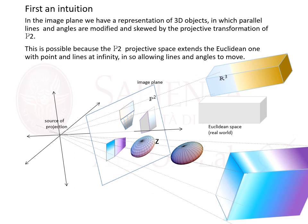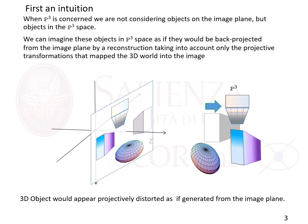This is made possible because the P2 projective space extends the Euclidean plane with points and line at infinity, thereby allowing lines and angles to move according to where the points at infinity and the line at infinity are. When P3 is concerned, we are not considering objects on the image plane but objects in the 3D space. We can imagine these objects in P3 space as if they would be back-projected from the image plane by reconstruction, taking into account only the projective transformation that mapped the 3D world into the image.